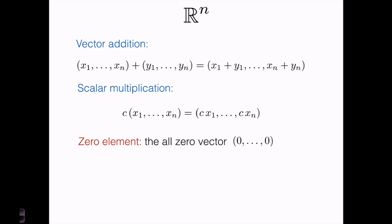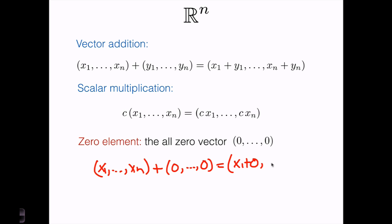Let's also go ahead and check that R^n contains a zero element. I claim that the zero element of R^n is just the vector all of whose coordinates are zero. Indeed, if I have some vector x1 through xn and I add to it the all-zero vector, then according to our definition of addition, every coordinate is xi plus zero. Using the property of real numbers that any real number plus zero is itself, this vector is just x1, x2 through xn. So any vector plus the all-zero vector is just itself — this is indeed the zero element.